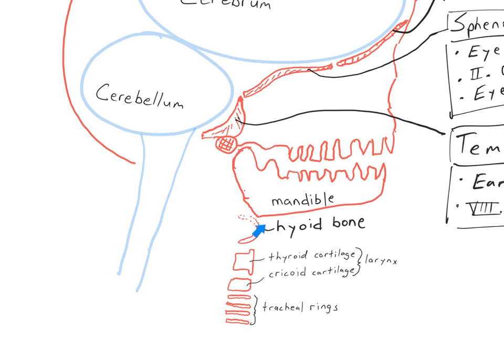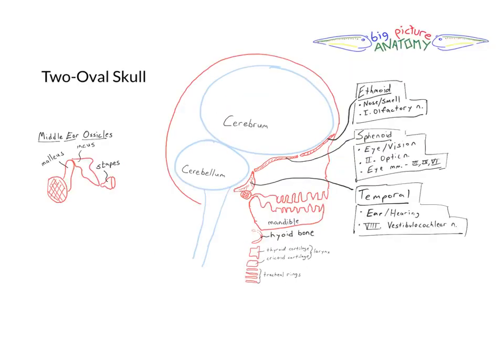The hyoid bone hanging just below the mandible, the two cartilages forming the larynx: the thyroid cartilage and the cricoid cartilage at the superior part of the trachea, as indicated here by the tracheal rings.